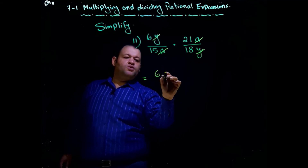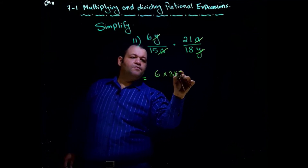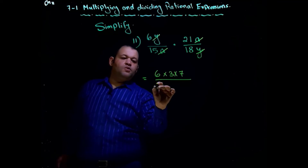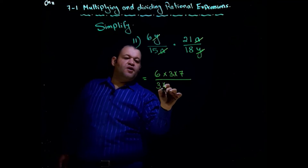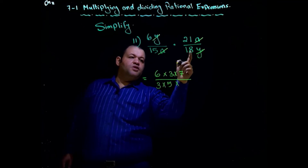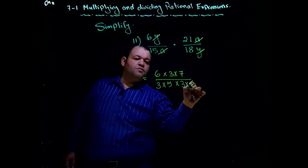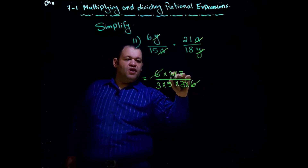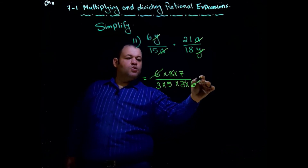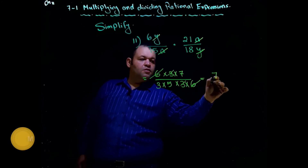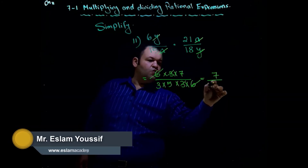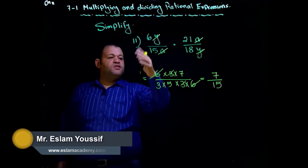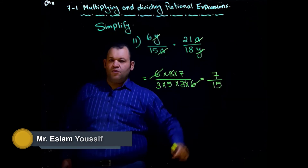We write 6 times 21, which is equal to 3 times 7; 15, which is equal to 3 times 5; and 18, which is equal to 3 times 6. Now we can cancel 6 and 6, and 3 and 3. The remainder is 7 over 3 times 5, which equals 15. So the simplest form of the expression is 7 over 15.